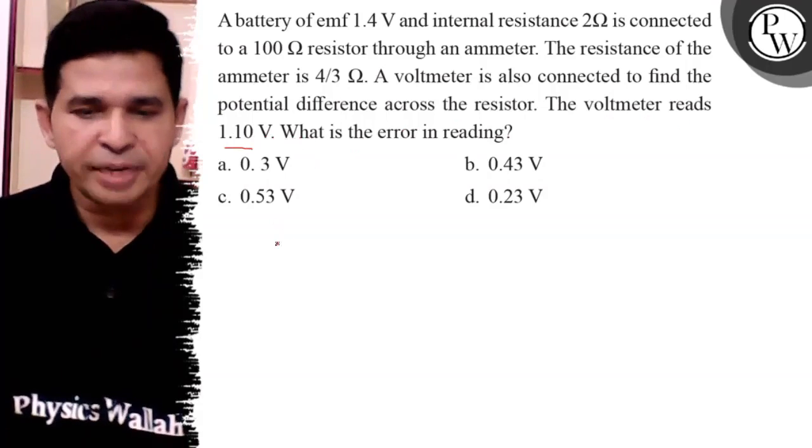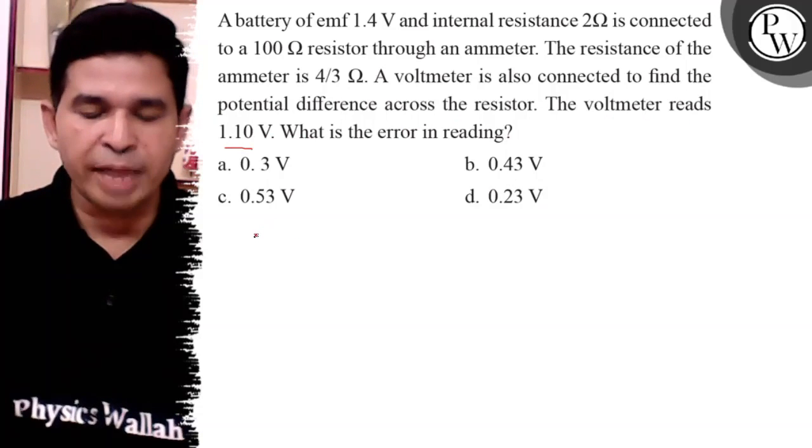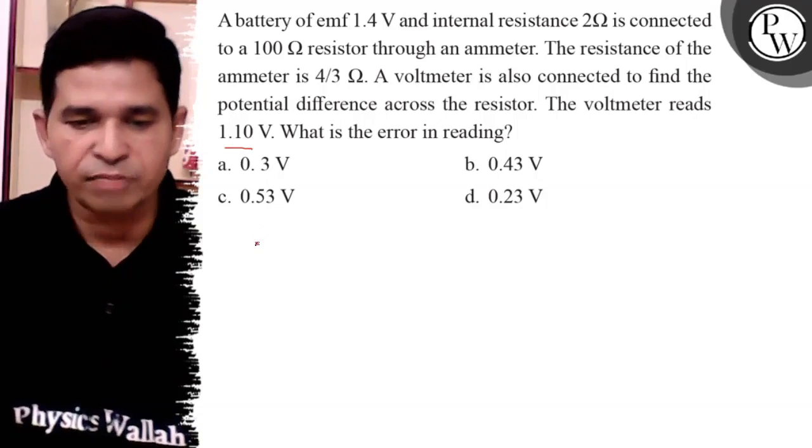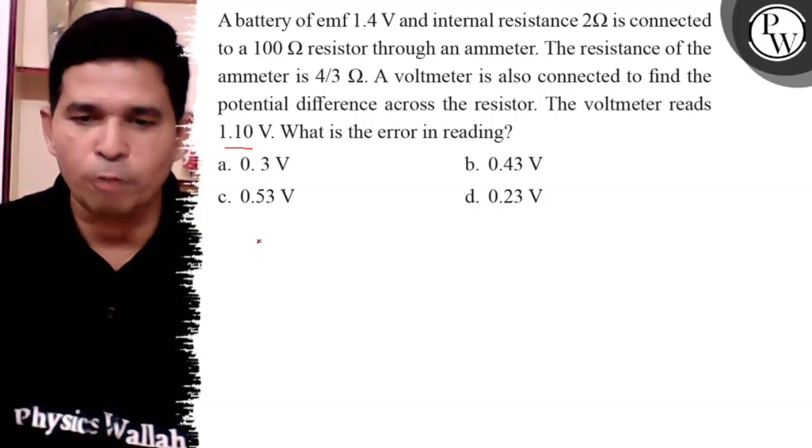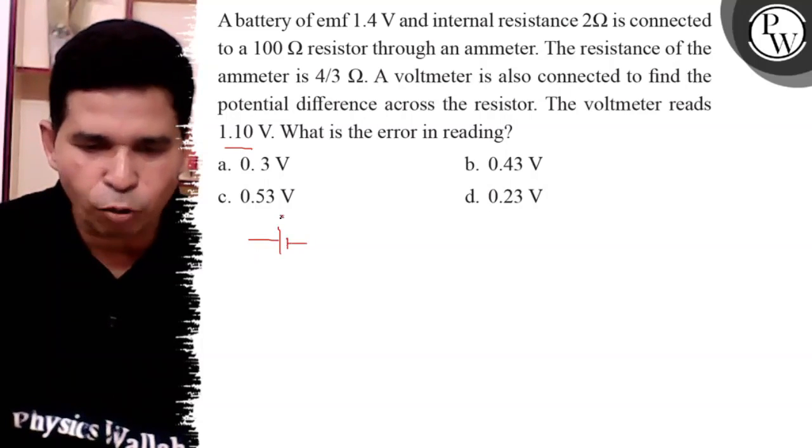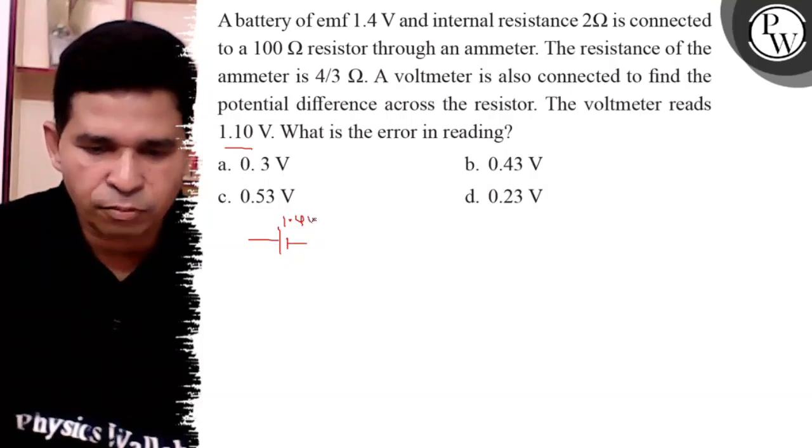An ideal voltmeter has infinite resistance, so make two diagrams: one with the voltmeter connected and one without connecting the voltmeter. What is the drop across the 100 ohm? So there are two diagrams. 1.4 volt is the voltage of the battery.